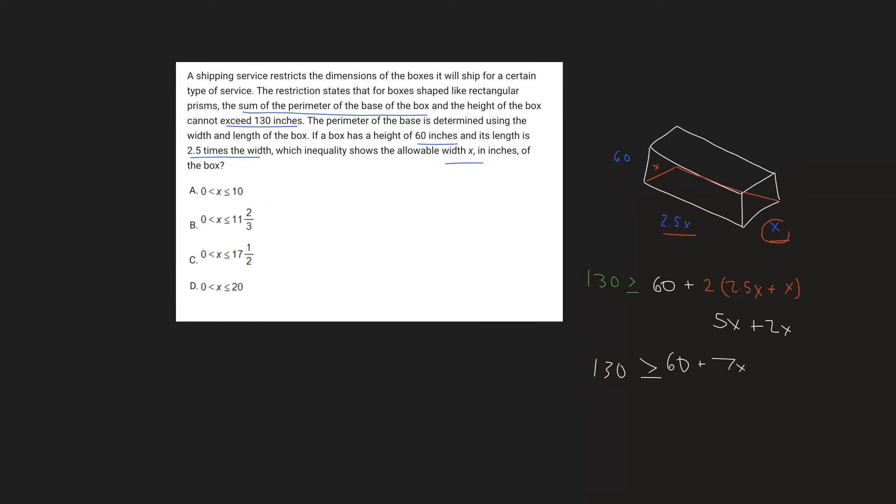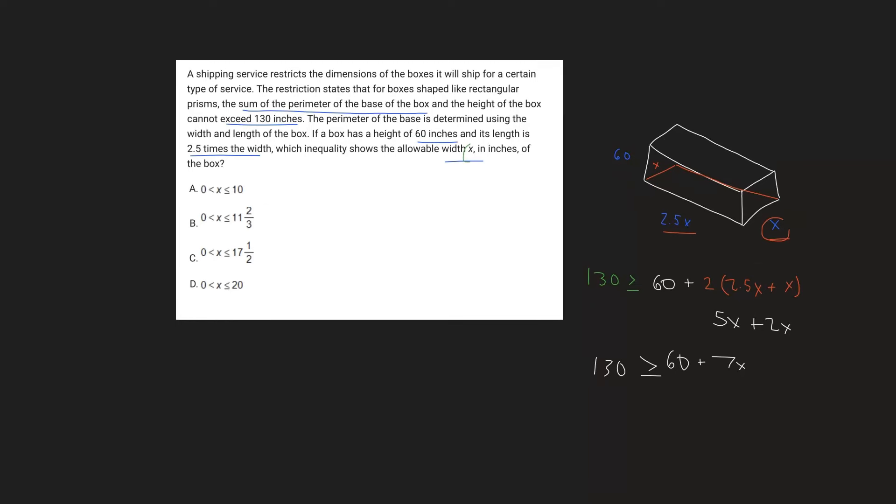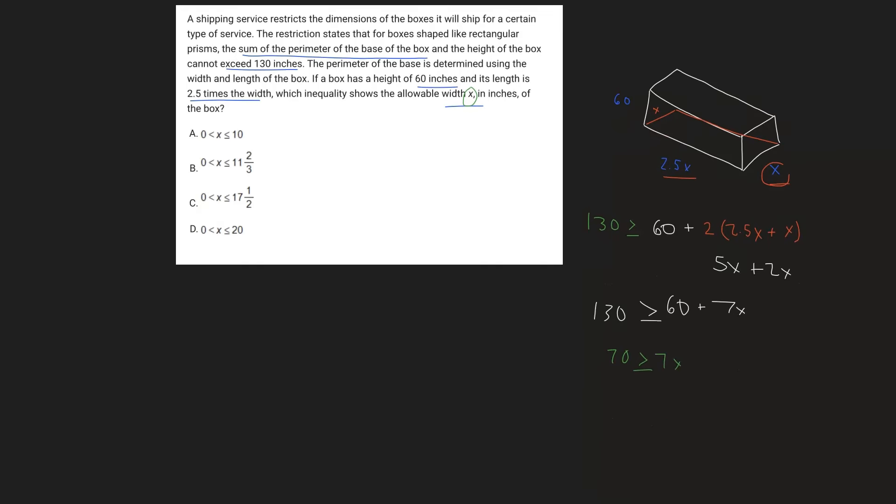And now we can just solve for x, because x is going to be that width that we're trying to solve for. And so we can just subtract 60 on both sides, and we get 70 is less than or equal to 7x. Divide both sides by 7, and we get x is less than or equal to 10.